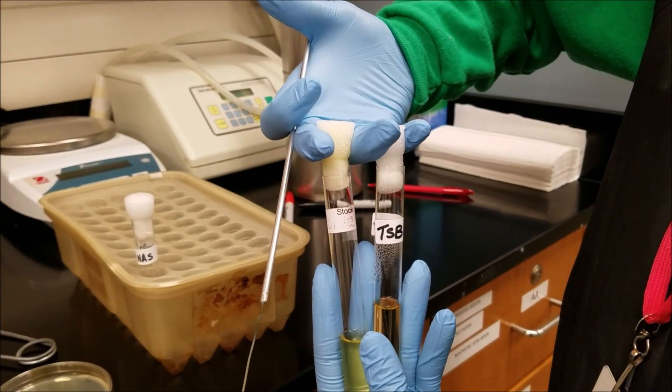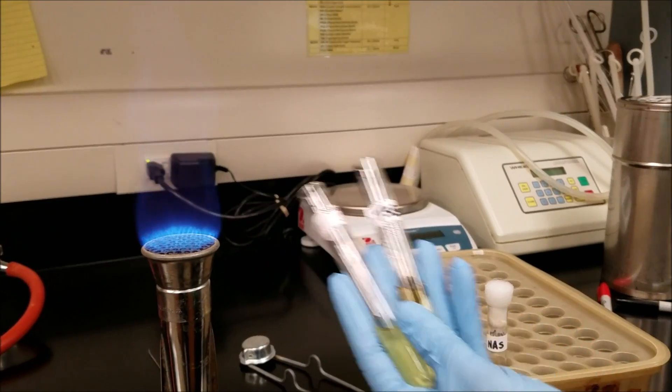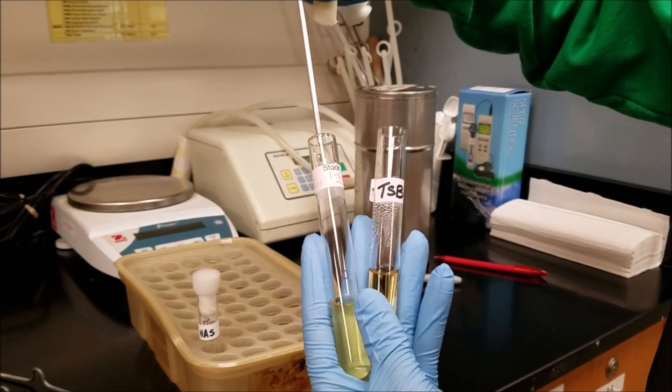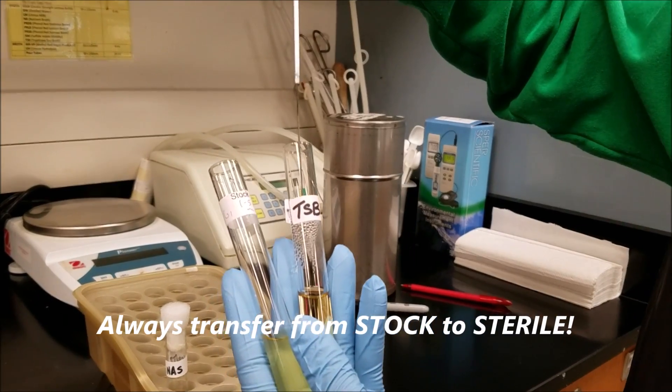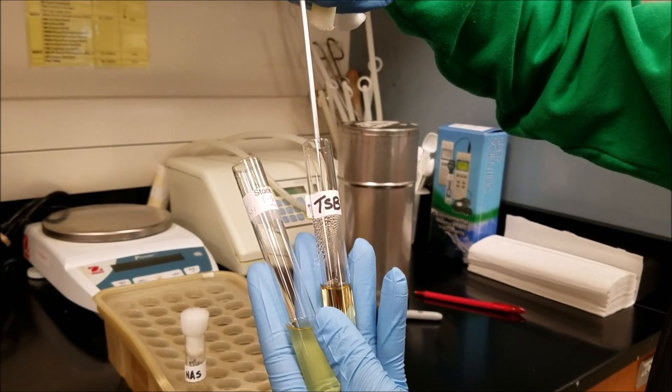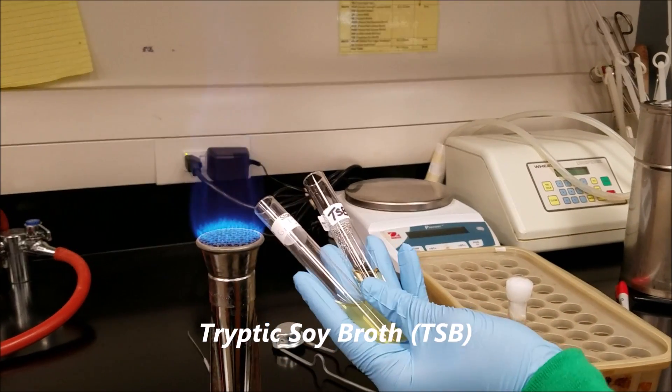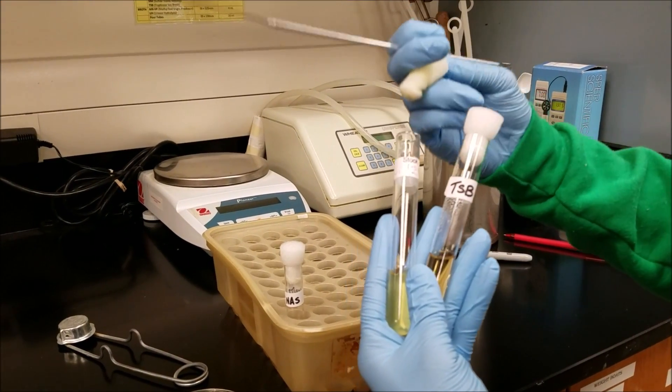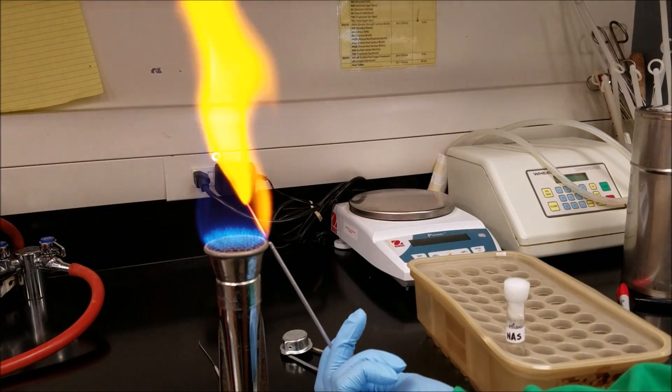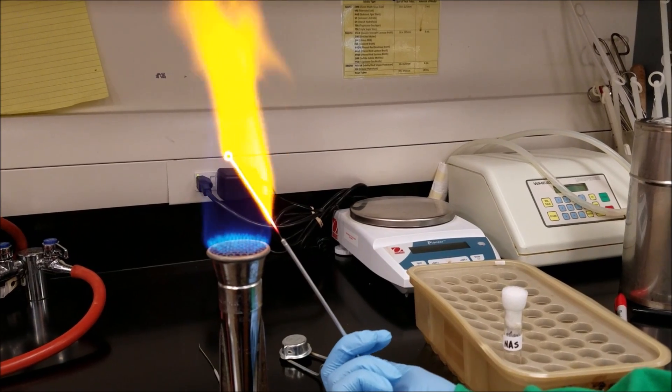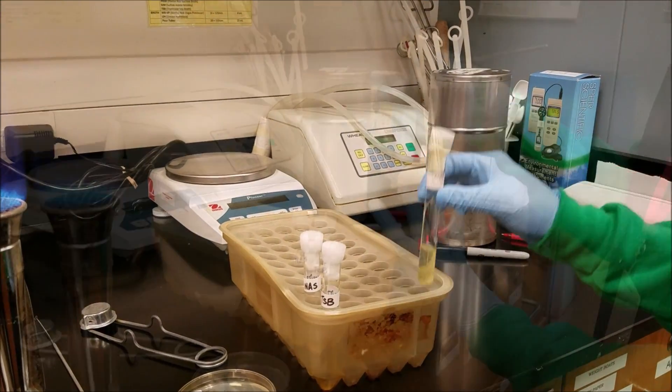You're going to lift the stoppers with your middle ring and pinky fingers. You're going to zig-zag the rims of the test tubes into the flame and you're going to lower your loop inside of the stock test tube, swirl it and ease it up and you're going to transfer it into the sterile media. TSB stands for tryptic soy broth. And you're going to repeat the zig-zag motion to flame the rims once more. And you're going to replace the stoppers, flame your loop one more time. And you're going to return the test tubes back to the rack as you found them.